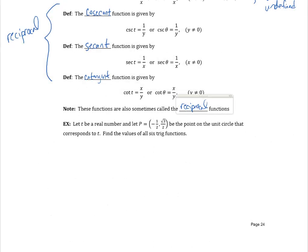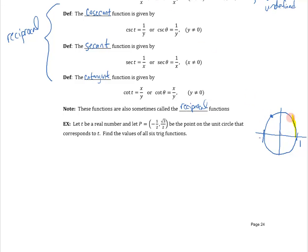We've now created six functions defined based on the coordinates where you travel length t along the unit circle, or where an angle in radians intersects it. Now we can go ahead and evaluate all six trig functions if we know the coordinates of a point on the circle. Let t be a real number, and say that on the unit circle we go to the point negative one-half, square root of three over two. We don't actually need to know what t is exactly — t is that angle or that distance along the outside. We just go back to the definition to find all six trig functions.